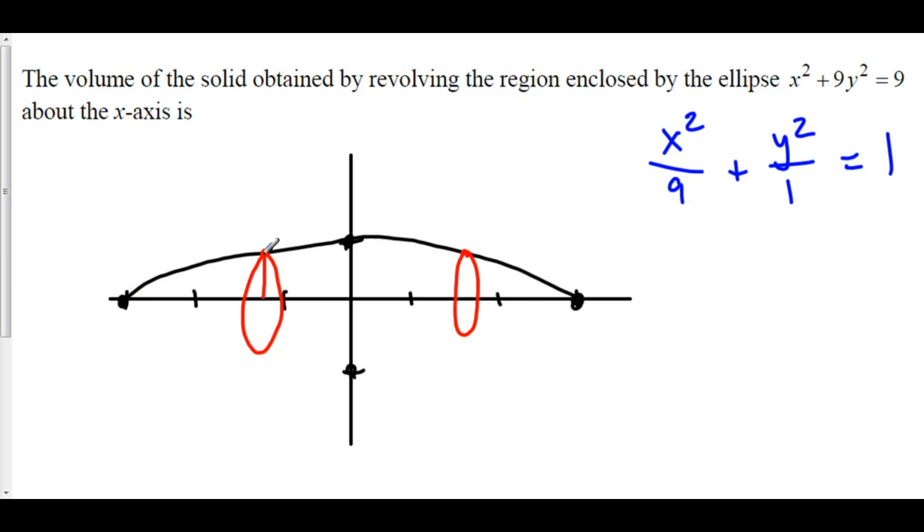We also have to know the area of our cross-sections. The area of a circle is pi r squared. The r here is the function value or the distance from the x-axis to the function, which is just the function value.